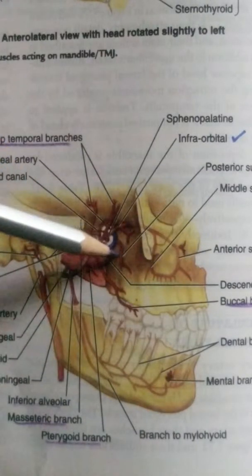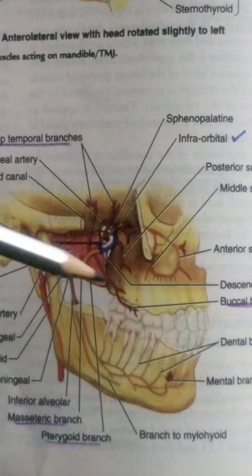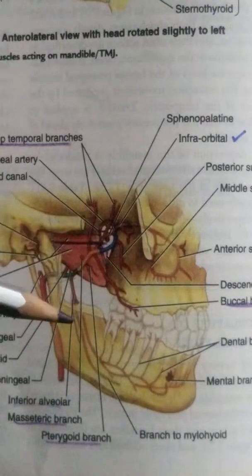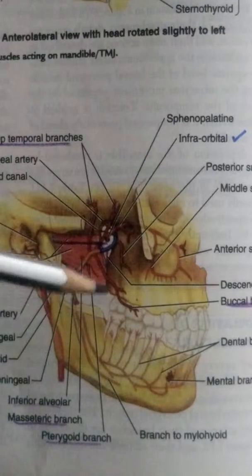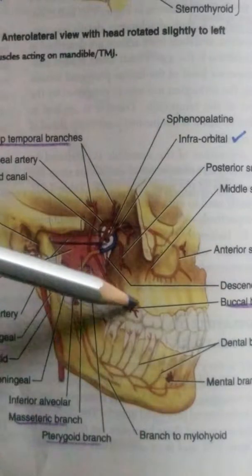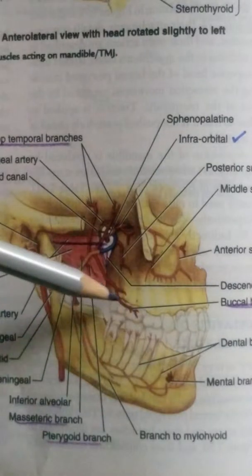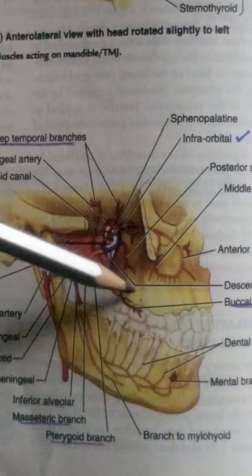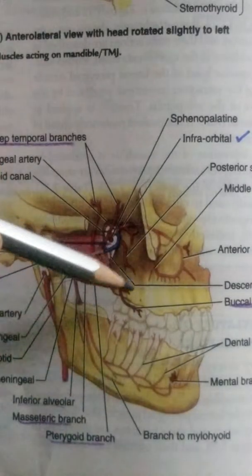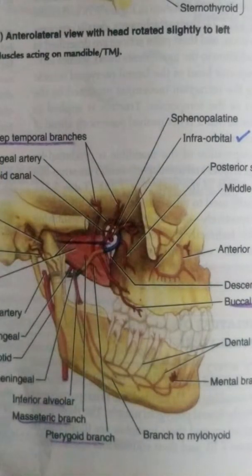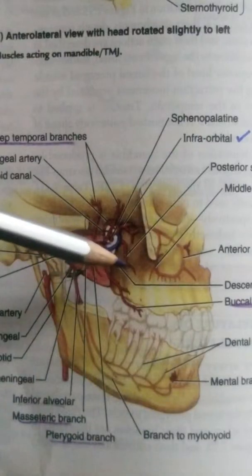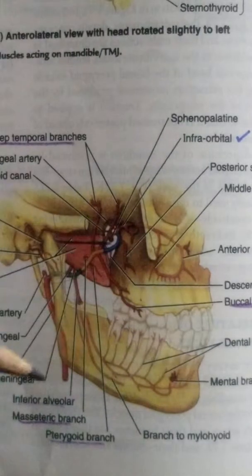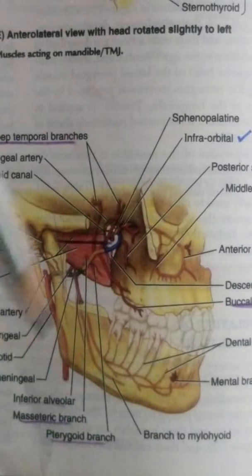The posterior superior alveolar artery goes downward along the maxilla. As we know, the posterior superior alveolar is always related to teeth, so it supplies the molars and premolars. It also lies on the maxilla and supplies the maxillary sinuses.